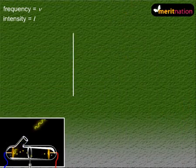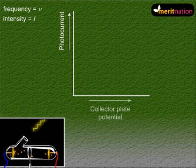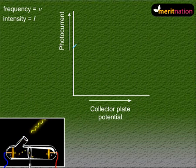Now let's plot our photocurrent against the collector plate potential and what do you see? The photoelectric current increases with increase in accelerating or the positive potential.